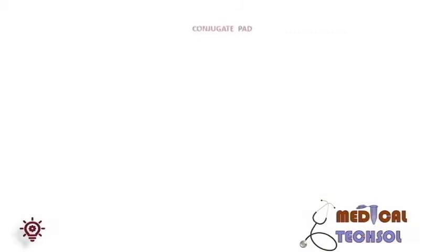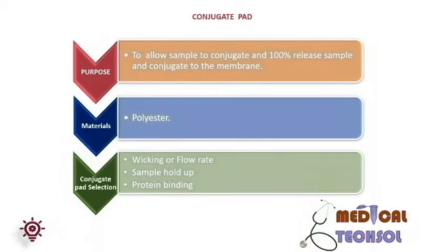The conjugate pad's function is to allow the sample to interact with the conjugate and achieve 100% release of the sample and conjugate to the membrane. General materials used are polyester (PTR) or polystyrene pad. Factors to consider when selecting the conjugate pad are: number one, flow rate; number two, sample holding volume; number three, binding. The conjugate can be added into the pad via dipping or dispensing method.